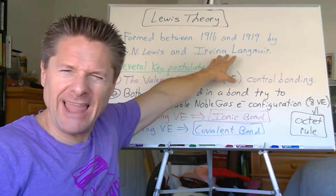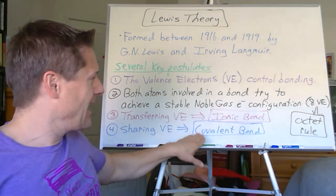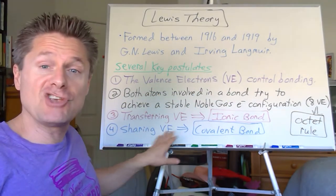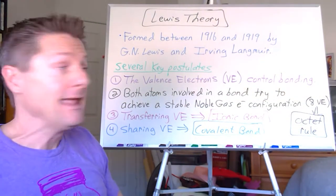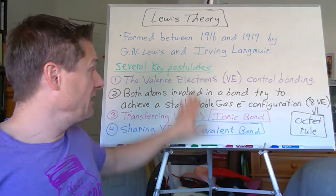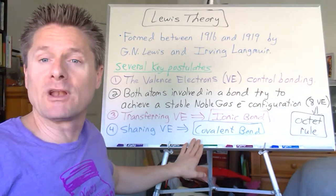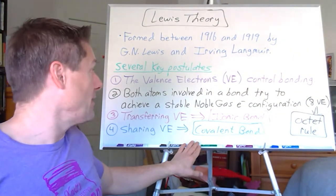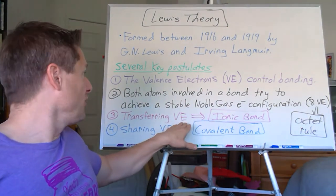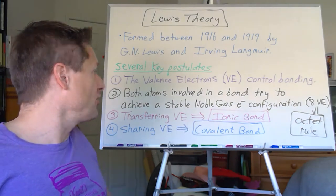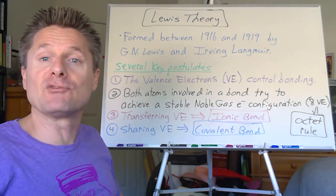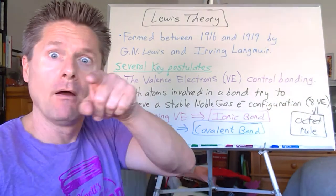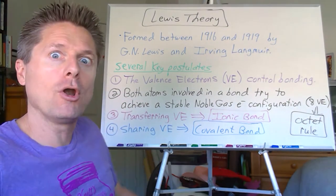When atoms share valence electrons, that's a covalent bond. It was actually Langmuir who came up with that term. Most of Lewis theory we're going to apply to covalent bonding, but we'll also briefly touch on transferring electrons with ionic bonding in the next part.